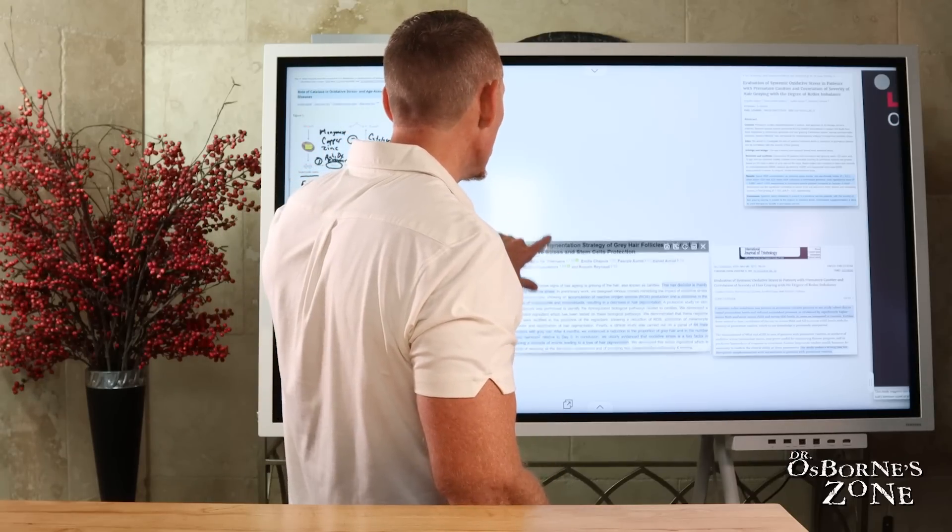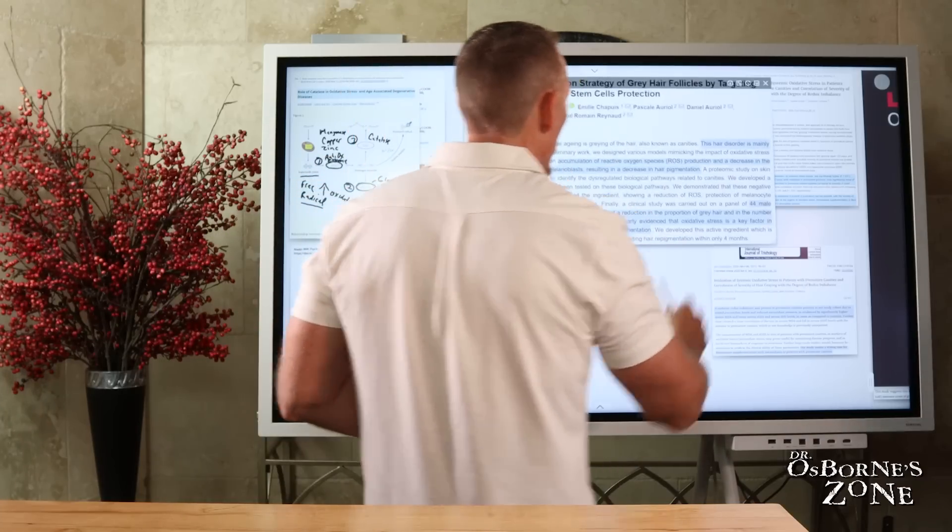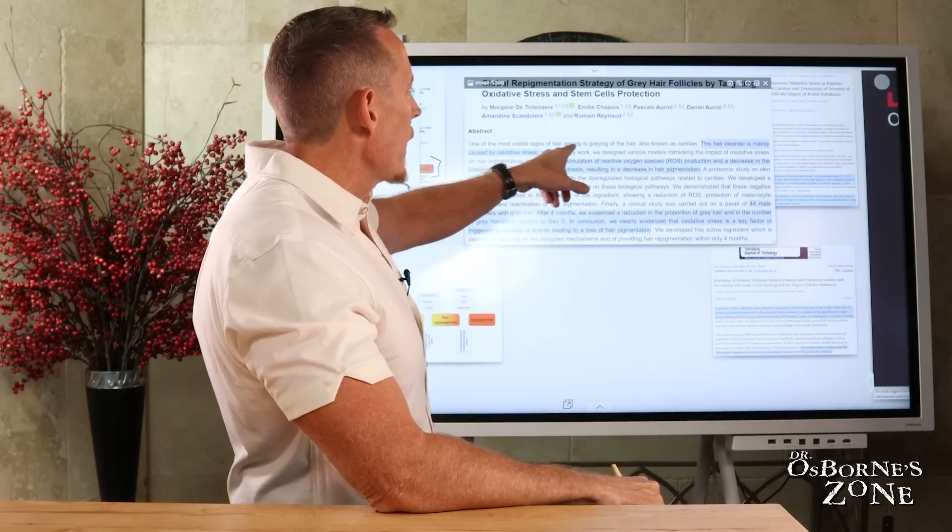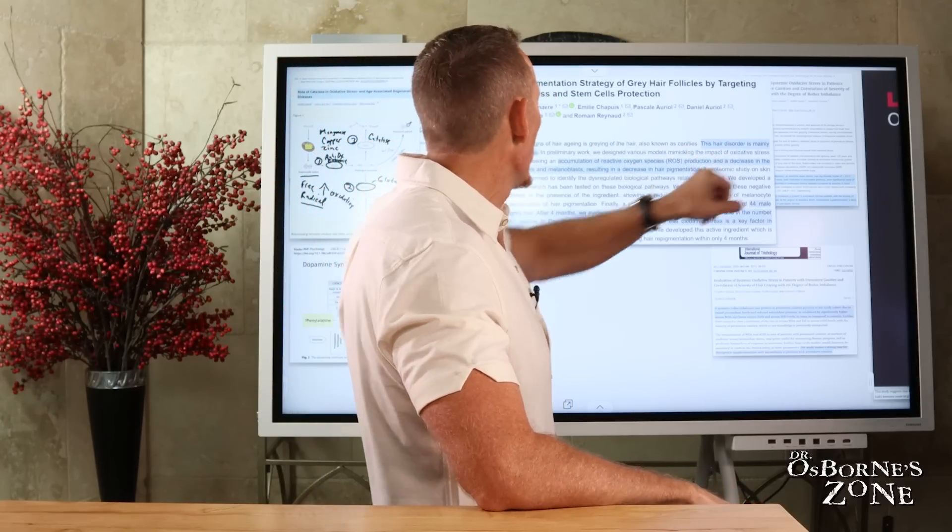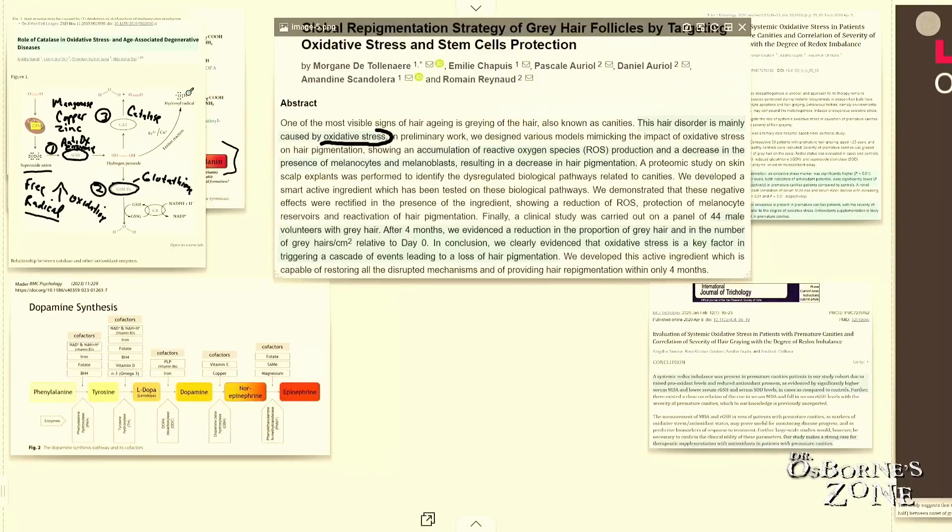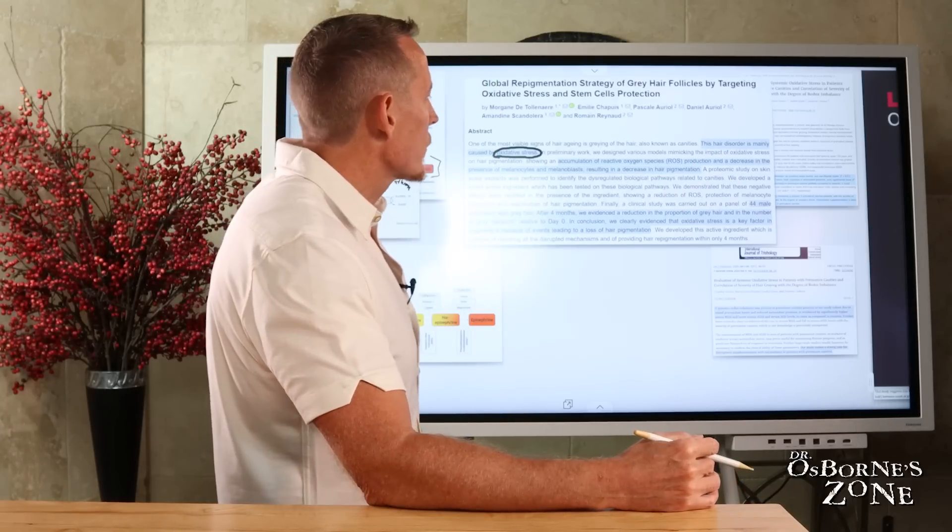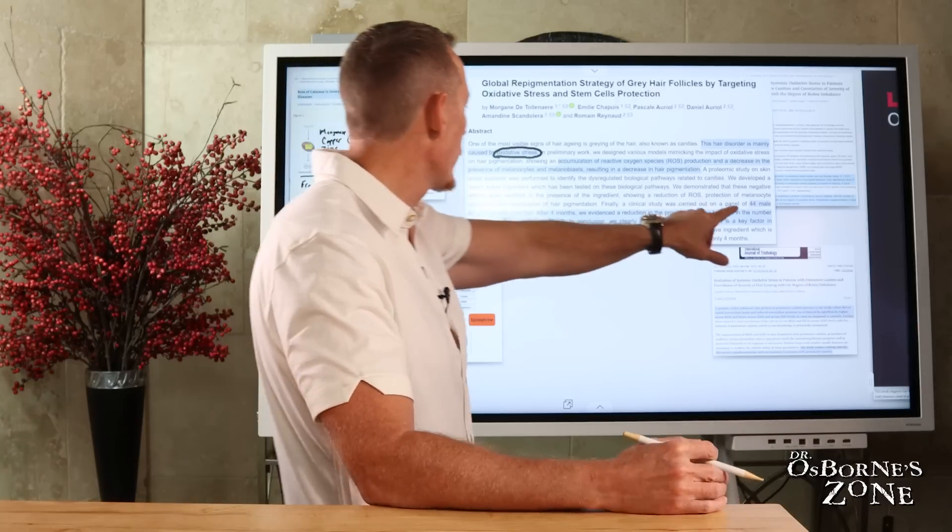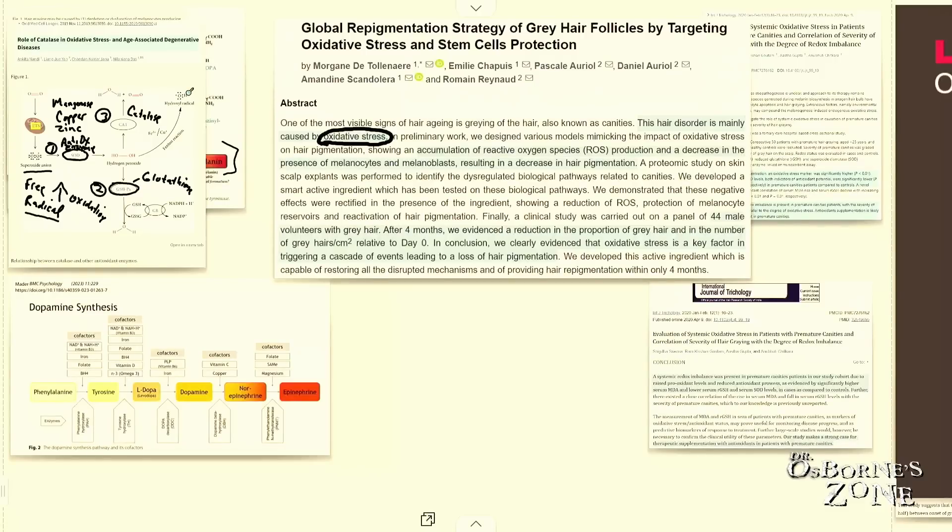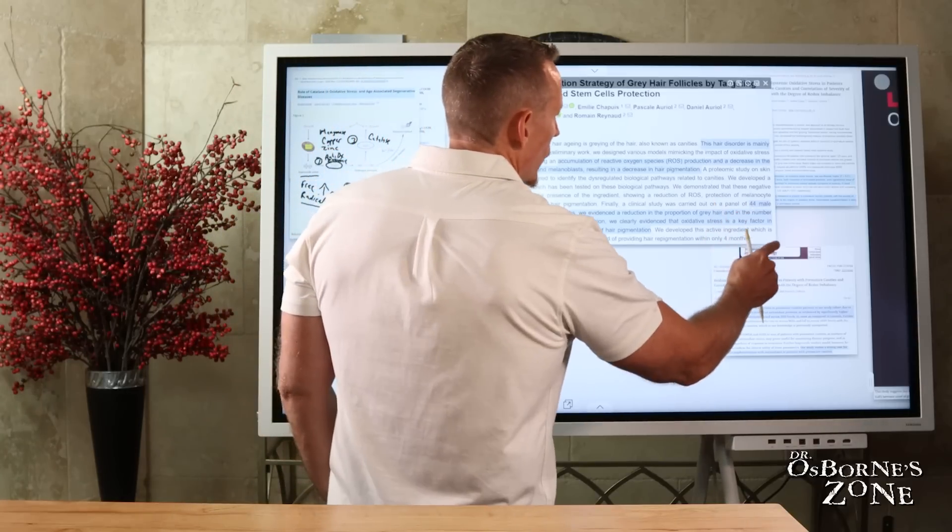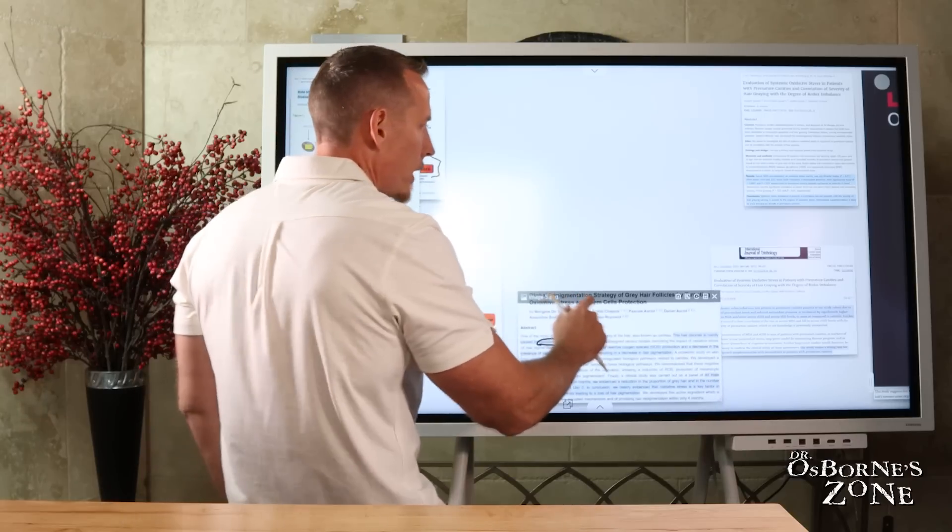I want to show you just some of what the researchers are saying about this. You can see here, one of the most visible signs of hair aging is graying of the hair, also known as canities. This hair disorder is mainly caused by oxidative stress, free radical production, accumulation of reactive oxygen species. In essence, accumulation of free radicals and a decrease in the presence of melanocytes and melanoblasts resulting in a decrease in hair pigmentation. This was a study done in 44 male volunteers with gray hair. After four months, we evidenced a reduction in the proportion of gray hair and in the number of gray hairs relative to day zero. In conclusion, we clearly evidenced that oxidative stress is a key factor in triggering cascade of events leading to loss of hair pigmentation. So again, what's causing the premature graying? It's oxidative stress, free radicals.